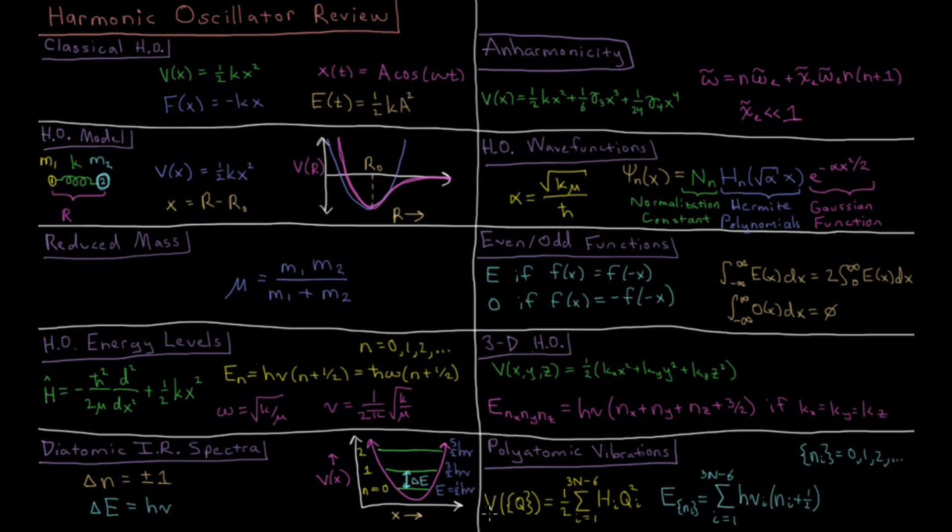You basically have a potential energy which depends on those normal coordinates in the same kind of way. Instead of one half kx squared, we have one half this element called a Hessian element, which is an effective spring constant times the displacement from that normal mode squared.